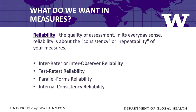We want three things in measures. We want them to be reliable, valid, and practical. Reliability concerns the quality of measurement, the quality of assessment. In its everyday sense, reliability is about the consistency or the repeatability of your measures. Think about stepping on and off a scale or using a ruler. There are several forms of reliability, including inter-rater or inter-observer reliability, test-retest reliability, parallel forms reliability, and internal consistency.